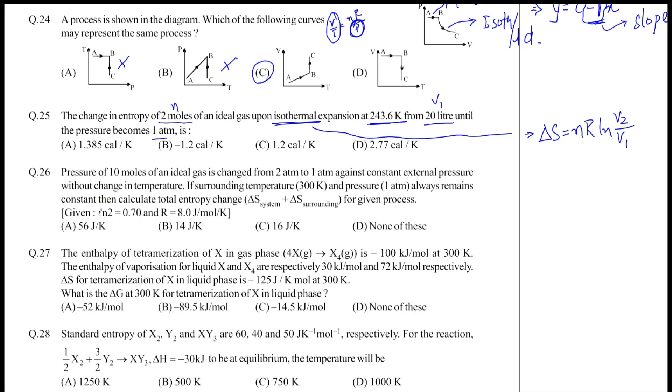So n, R, and V1 are already known in this question. V2 is not known, but you can always use V2 equals nRT by P2. N and T are known to us, and P2 is also known. So you calculate V2, use it in this equation to calculate delta S.